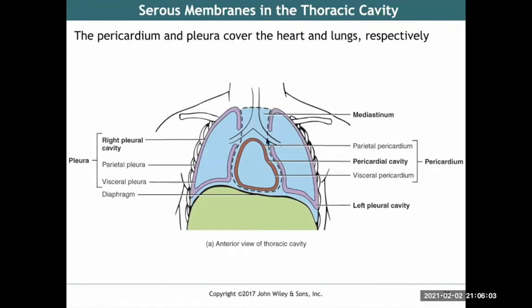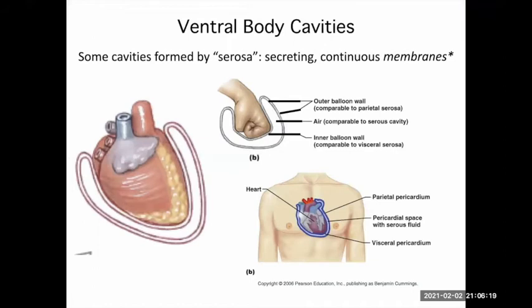Those sacs are formed by what are called serous membranes. The basic idea is that there's a double-layered sac: one part touches the organ, and one part is on the outside, with the actual cavity — the fluid-filled space — in between. Using an analogy: the fist is the heart, there's a side of a balloon touching the heart, and then there's the space in between — that's the actual cavity formed by these membranes.